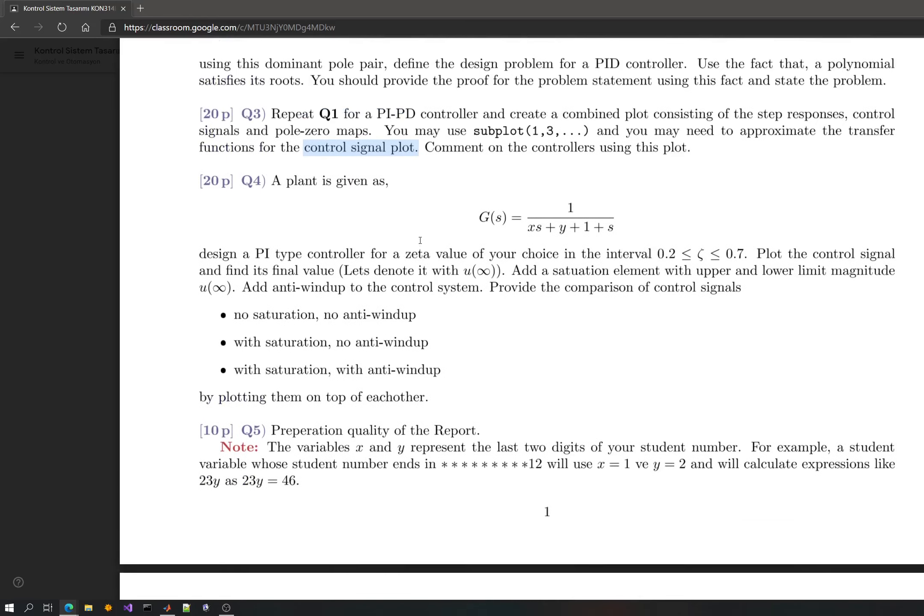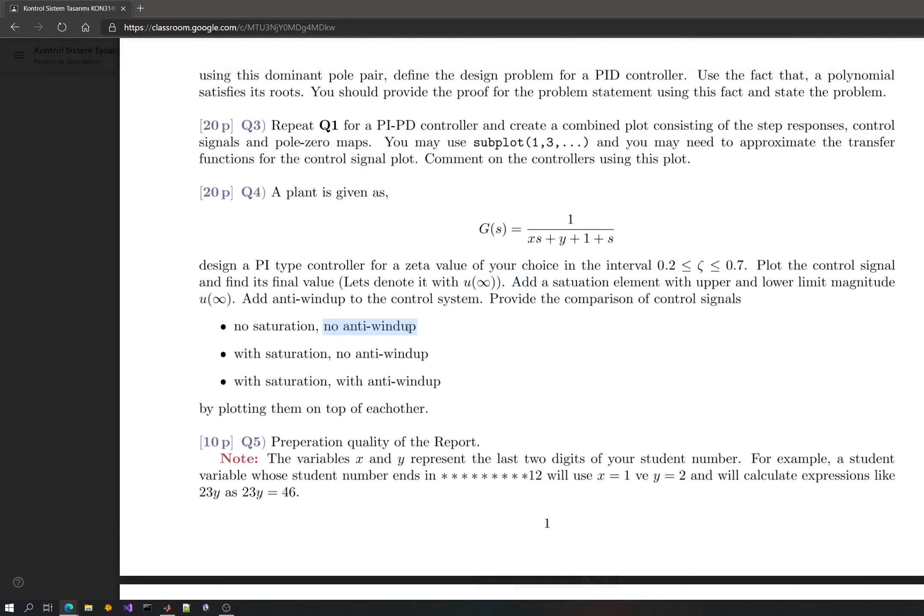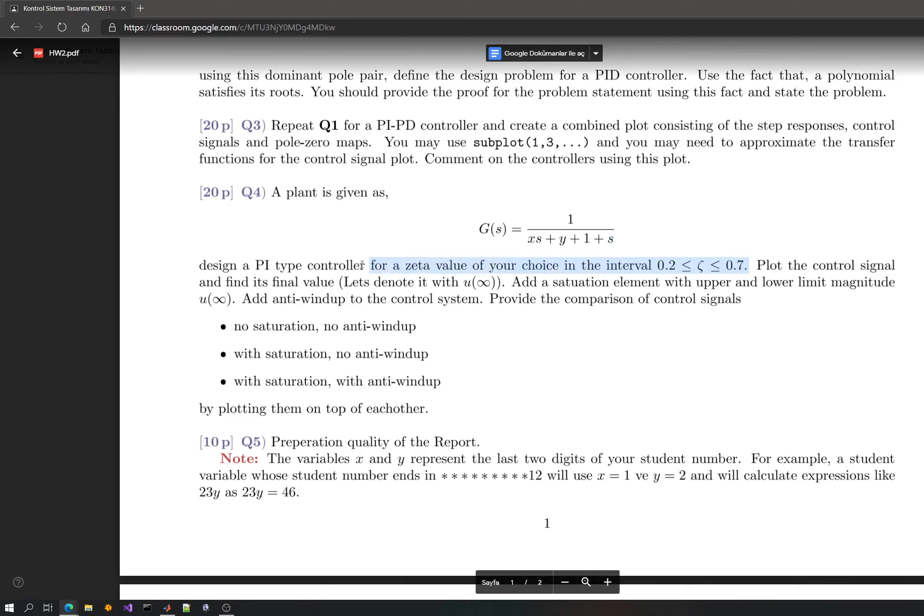Then we have Q4, the last question. This is about the anti-windup that we will see in the upcoming lectures. Once we had that lesson, you will use your student ID to generate the transfer function. Then quickly design a PI controller that has a certain damping in this interval. Choose freely.